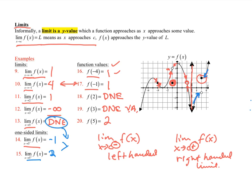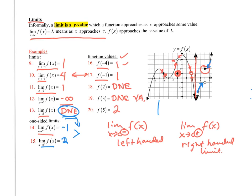If the left-handed limit does not equal the right-handed limit, then the overall limit does not exist. That's what happens at x approaches 5.